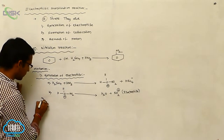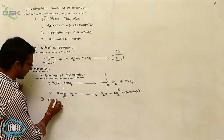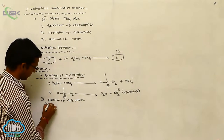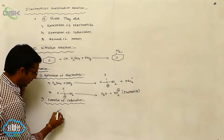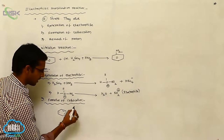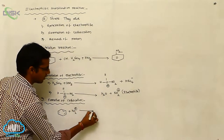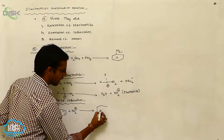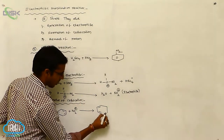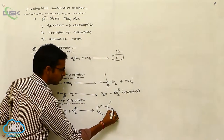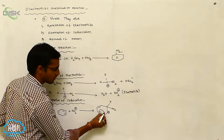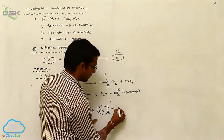The second step is the formation of the carbocation. Benzene reacts with the electrophile NO₂⁺. The attacking of the electrophile involves bond cleavage. Here, NO₂ carries a positive charge. This positive charge is stabilized or neutralized by the shifting of the pi bond toward the adjacent carbon, and it shows resonating structures.